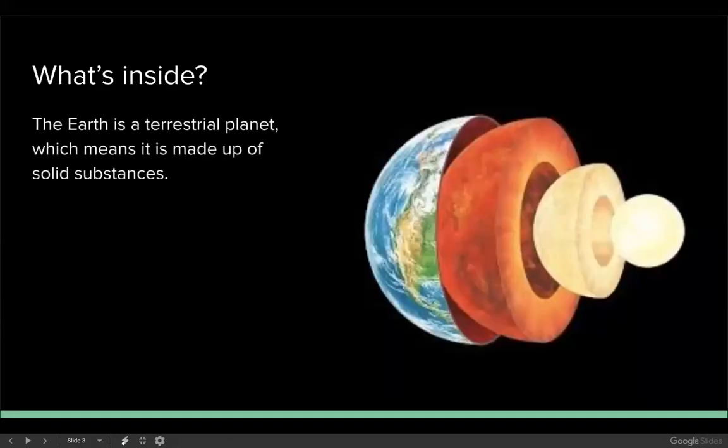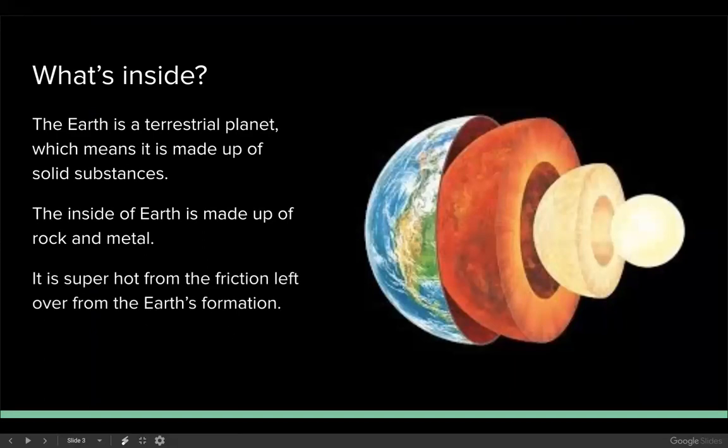This part is not in your notes, just listen. The earth is a terrestrial planet which means it's made up of solid substances. Terrestrial comes from a word meaning rocks. The inside of the earth is made up of rocks and metal. It's super hot from the friction left over from the earth's formation, like the video showed.